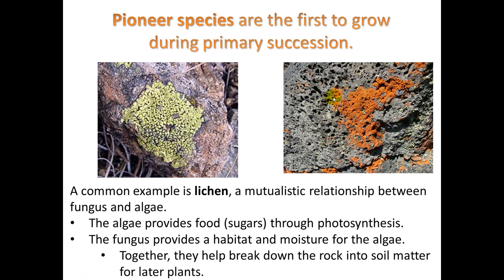The first species to come in are called the pioneer species. This is happening during primary succession where there is no soil, just rock. A common pioneer species is lichen — a mutualistic relationship between fungus and algae. The algae provides food and sugars through photosynthesis, and in turn the fungus provides a habitat for the algae and moisture for it. Together they help break down the rock into soil matter for later plants.